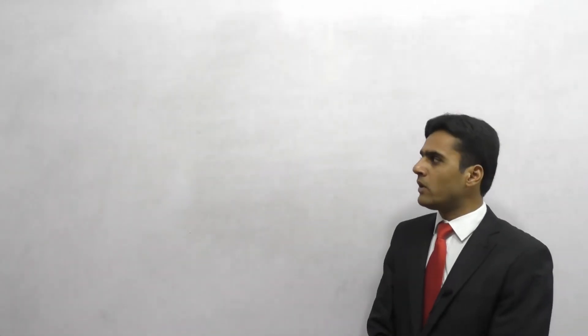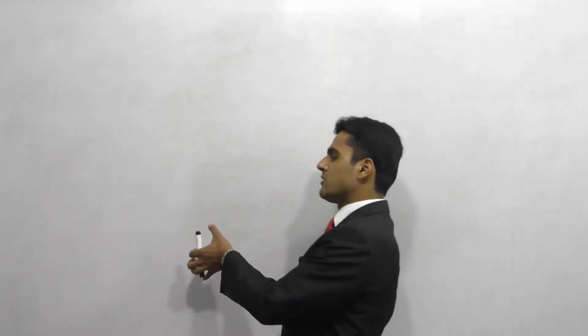Welcome everyone. We are going to start chapter nine of ACCA F6, which is capital allowances. In the previous chapter, I showed you the adjustments we need to make to trading profits. One adjustment was adding back depreciation, because HMRC says depreciation is not an allowable expense for taxation. So you take your accounting profit and add back the depreciation.